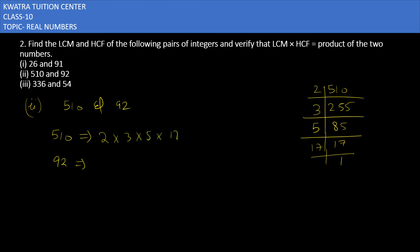Then 92 divided by 2 gives 46, then 46 is again divisible by 2 giving 23, and 23 is a prime number. So 92 can be written as 2² × 23.